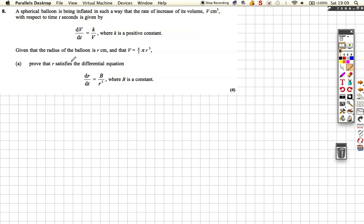And we've got to prove that r satisfies the differential equation dr/dt equals b over r to the power 5, where b is a constant. So we see here we've got something to do with dr/dt, but we've got lots of information we've been given to do with v. So we're going to have to set up some kind of chain rule here.